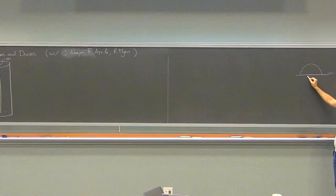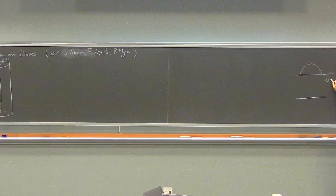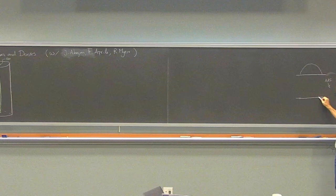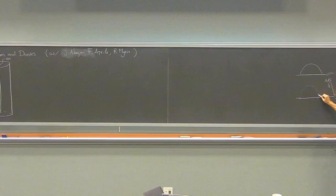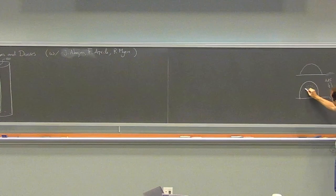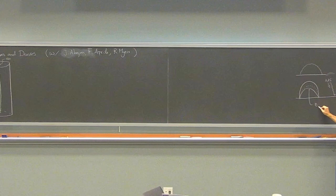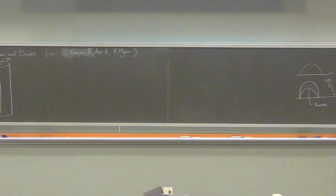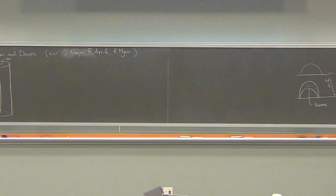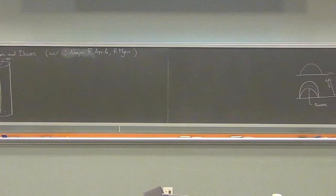What should I do if I want to study a three-point function where each operator is heavy enough to deform the geometry? The basic idea that we've been exploring with Jacob, Francesco, and Rob is that you should think of some kind of fat version of Witten diagrams. The geometry is approximately AdS far from the insertion points, but otherwise there will be some banana-like shape — and for three points, a three-legged banana.